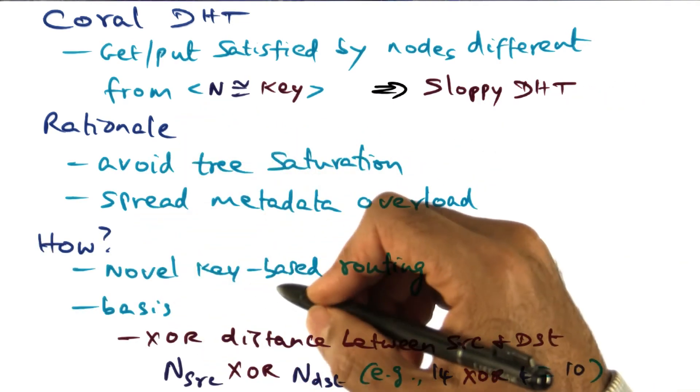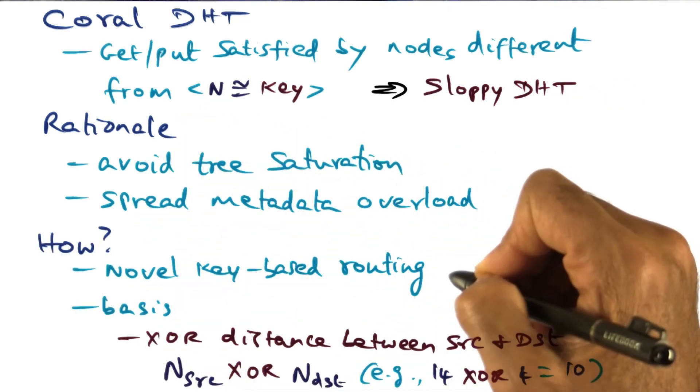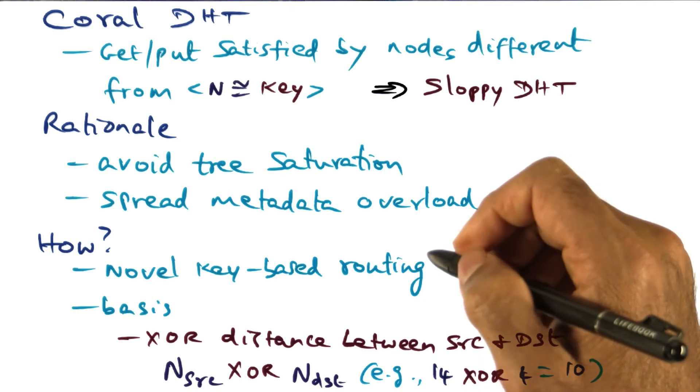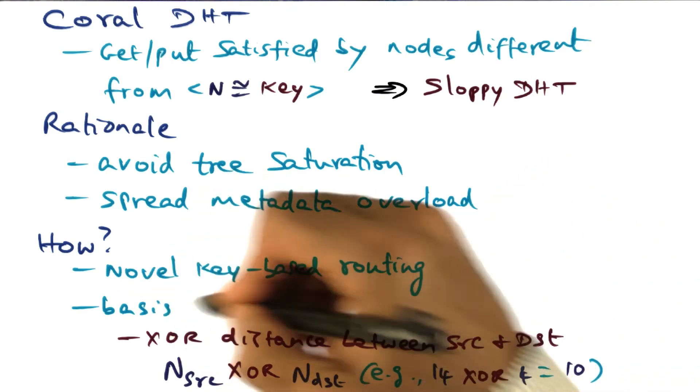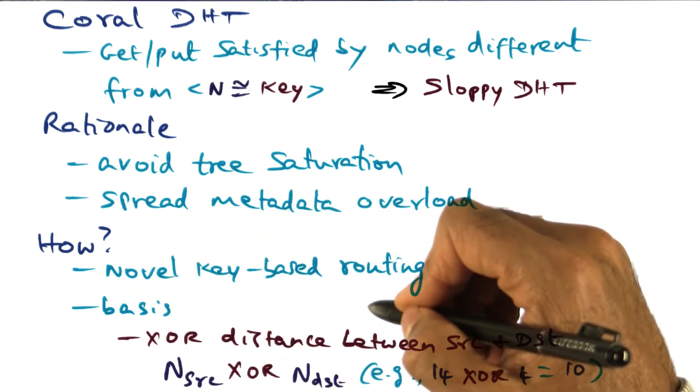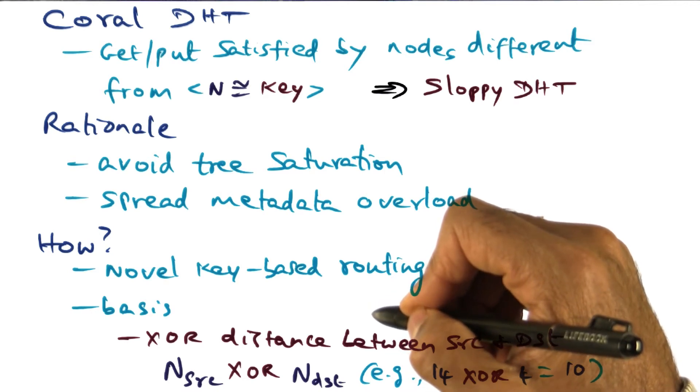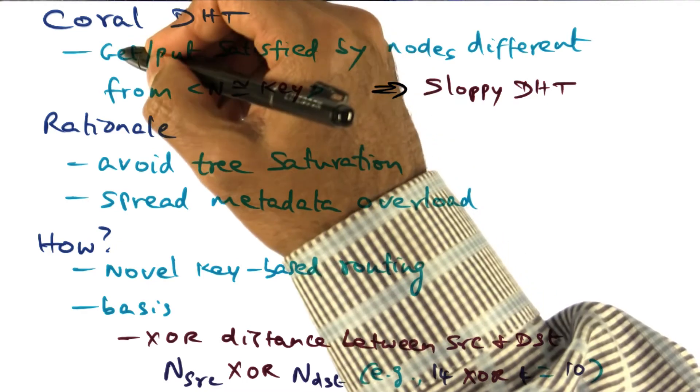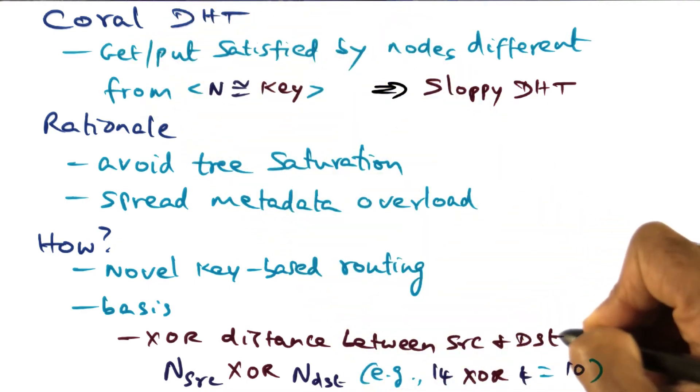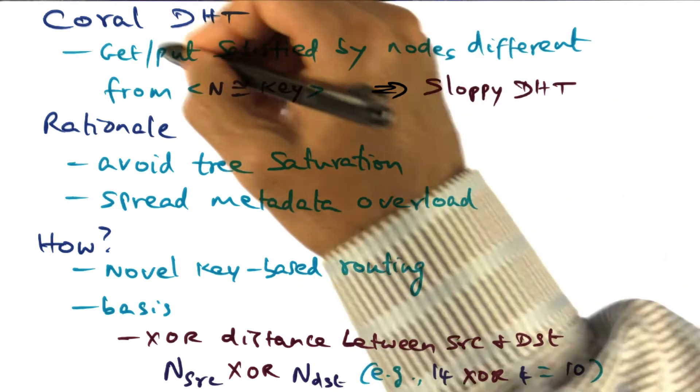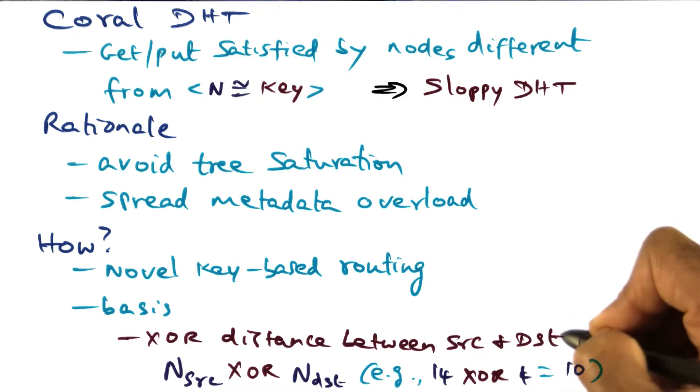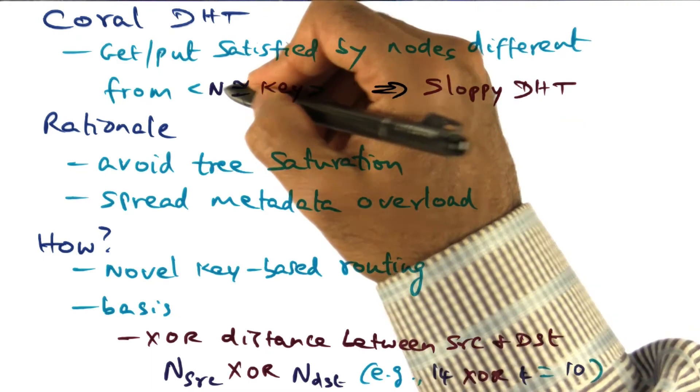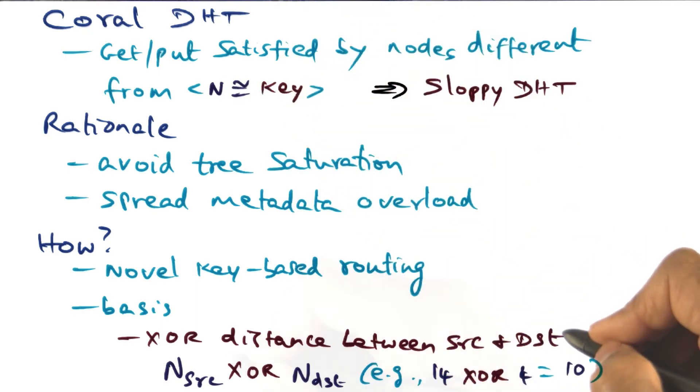How does Choral do it? It has a novel key-based routing algorithm which we'll describe. But the basis for that key-based routing algorithm is to compute the distance between the source of a get or a put operation and the destination for that get or put operation. The destination by default is going to be the node whose ID is equal to the key that you're looking for.